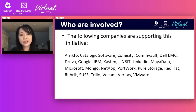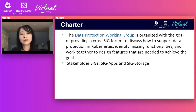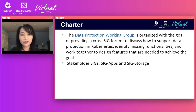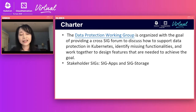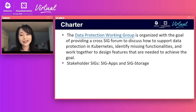As shown on this slide, there are many companies that have been supporting this working group. This is the charter of the data protection workgroup, listed on our working group's community page. This working group is formed so that we can have a cross-SIG collaboration to figure out what are the missing functionalities and work together to design features in order to support data protection in Kubernetes. The sponsoring SIGs for this working group are SIG Apps and SIG Storage.